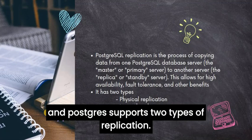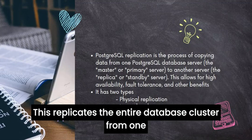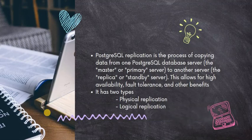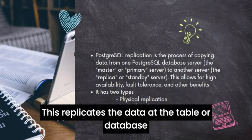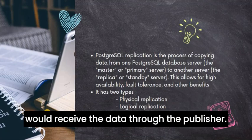Postgres supports two types of replication. One is physical or streaming replication, which replicates the entire database cluster from one server to another through WAL files. The other method is logical replication, which replicates data at the table or database level using a publish-subscribe model, where the subscriber receives the data through the publisher.